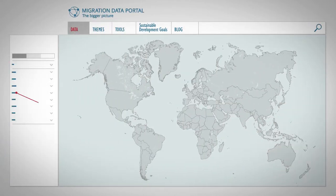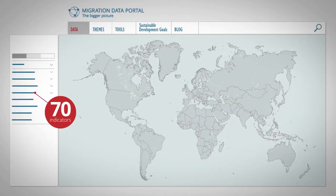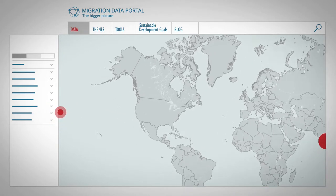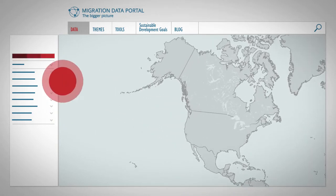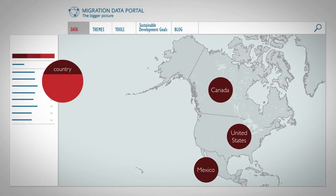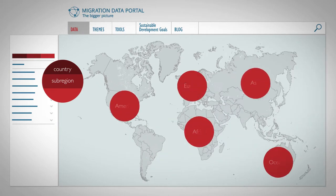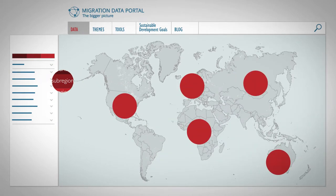An interactive world map features 70 indicators from 15 different data providers. You can break down the data by country, sub-region, and region.